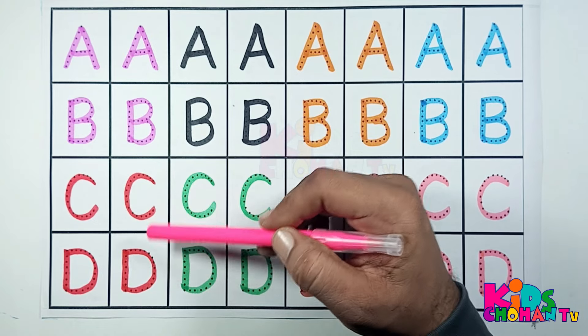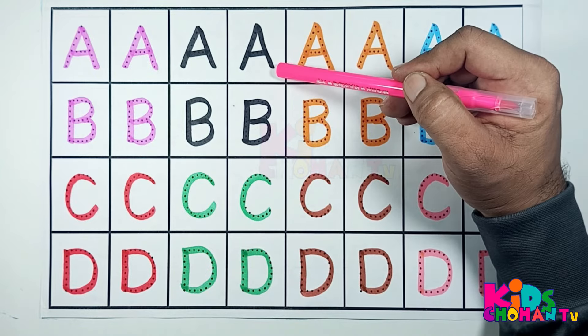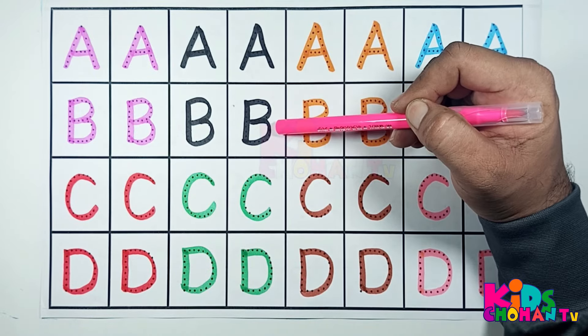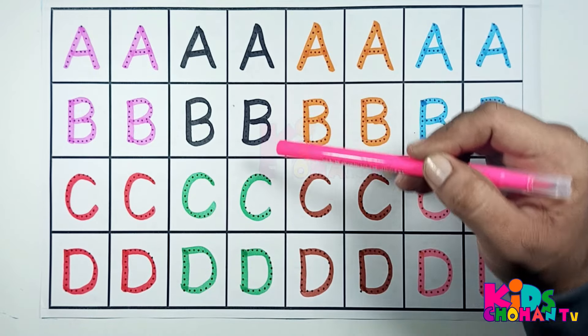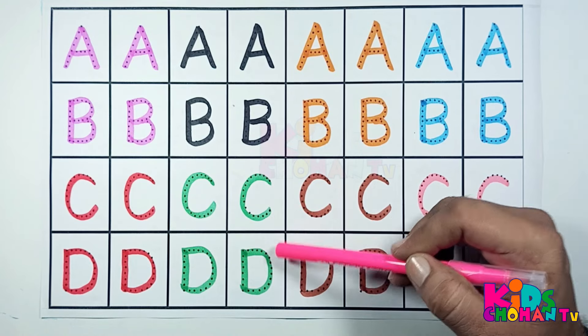A, B, C, D. A for alligator, B for balloon, C for car, D for door.